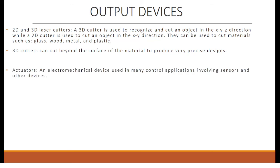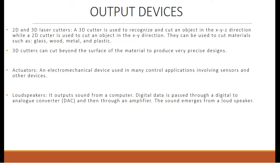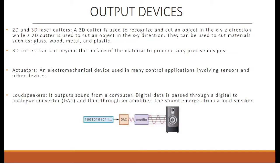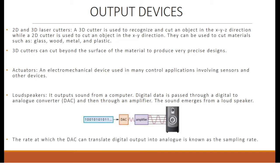Actuators are electromechanical devices used in many control applications involving sensors and other devices. Loudspeakers output sound from a computer — digital data is passed through a digital-to-analog converter (DAC) and then through an amplifier, and the sound emerges from the loudspeaker. The rate at which the DAC translates digital output into analog is known as the sampling rate.